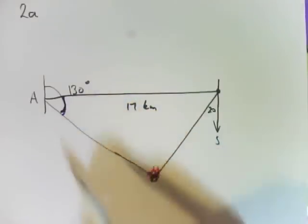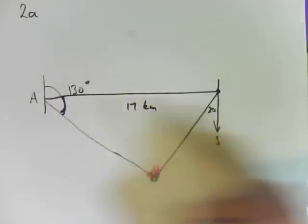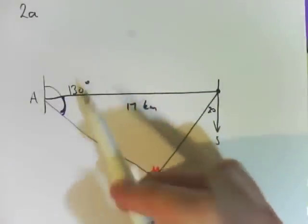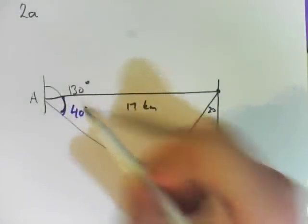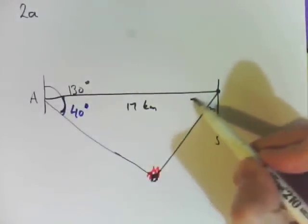That blue bit there is 130 minus 90 because this is on an east-west line. So 130 minus 90 puts us at 40 degrees. 90 minus 20 will get us this one. So that's on 70 degrees.